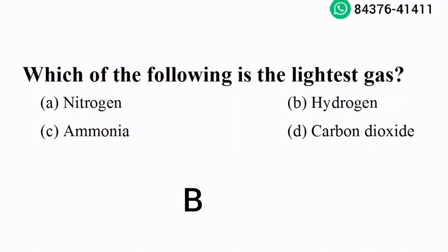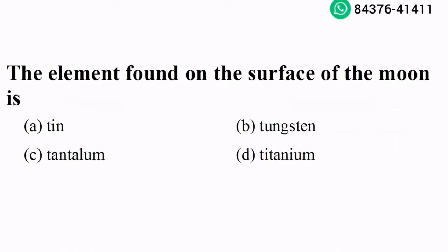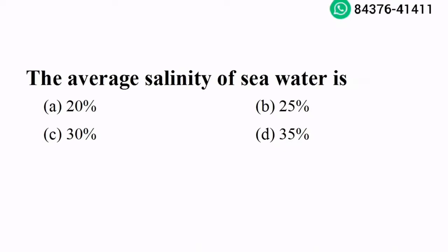Option B is the right answer. The element found on the surface of the moon is titanium. Option D is the right answer. The average salinity of sea water is 35%. Option D is the right answer.